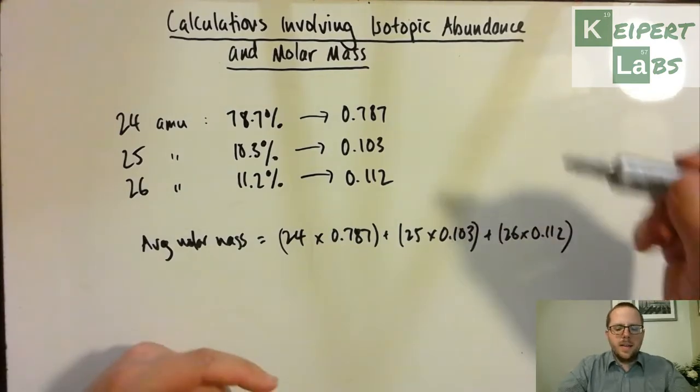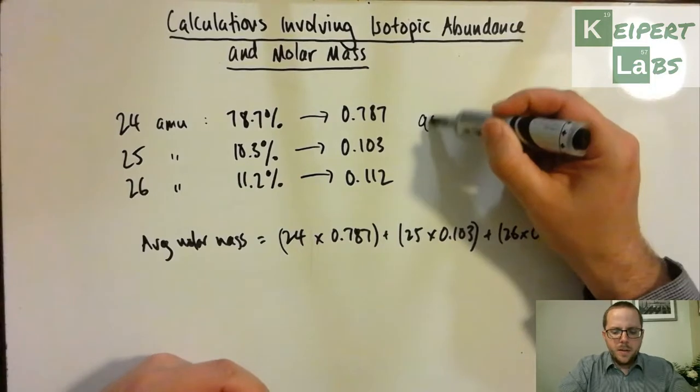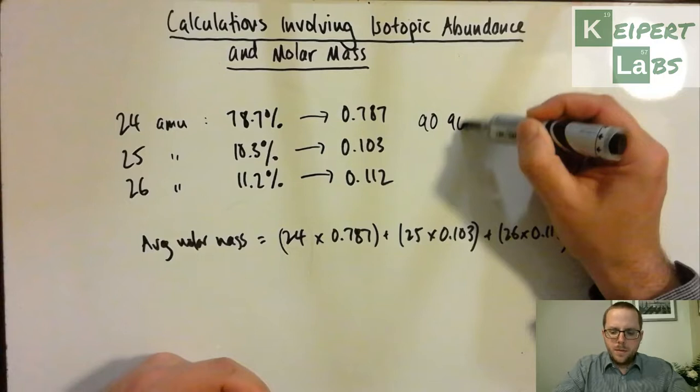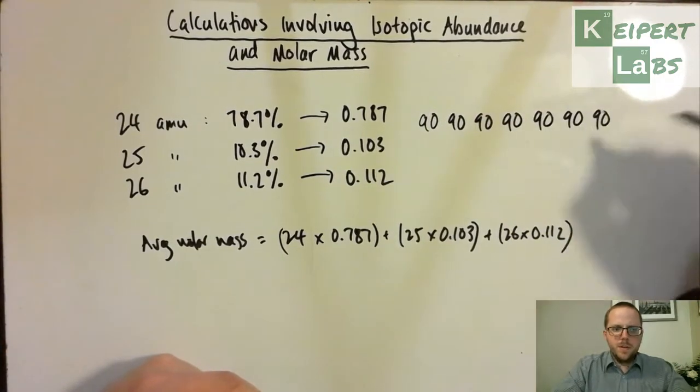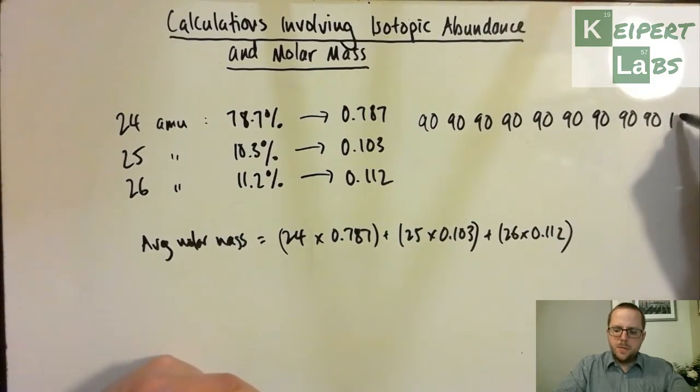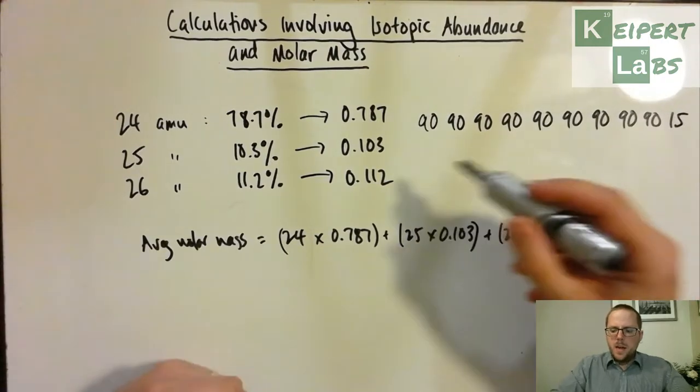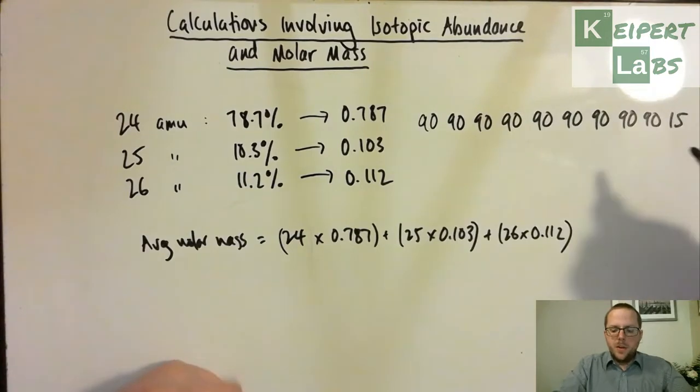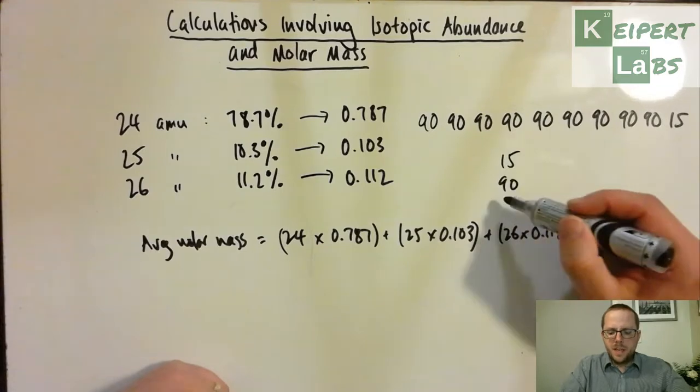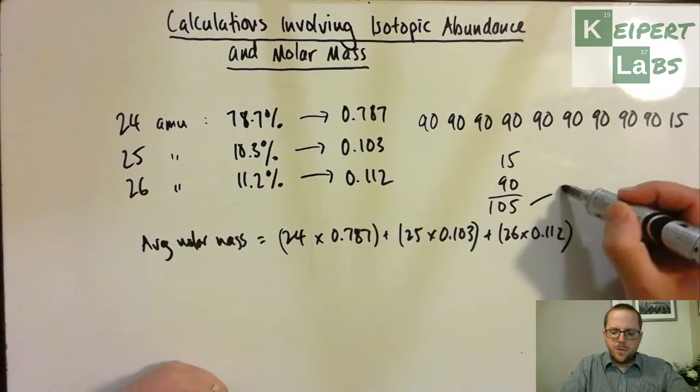Let's say you had a test and 10 people got scores. And so you had 90, 90, 90, 90, 5, 6, 7, 8, 9 times, and then one person tanked it and got 15%. Now you could say, well, there are two different scores in this test, 15 and 90, add them together and then divide by 2 to get an average score of 52.5, and say, well, the average for the test was 52.5.